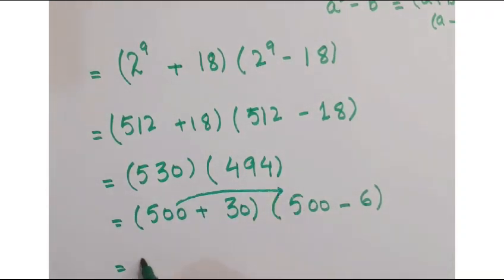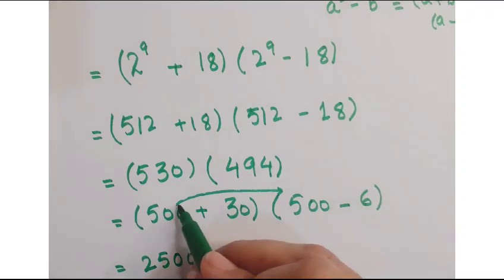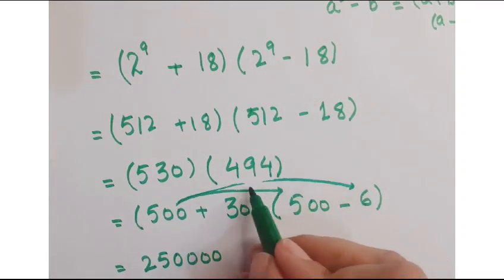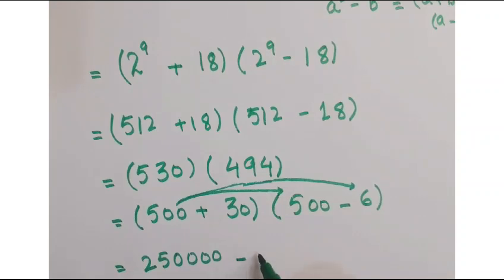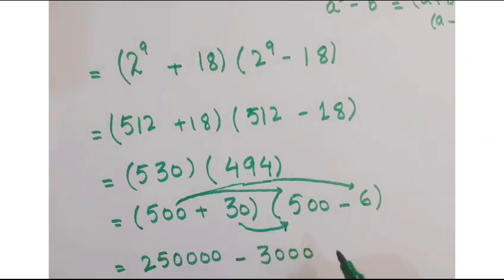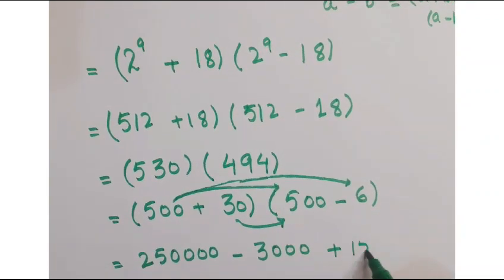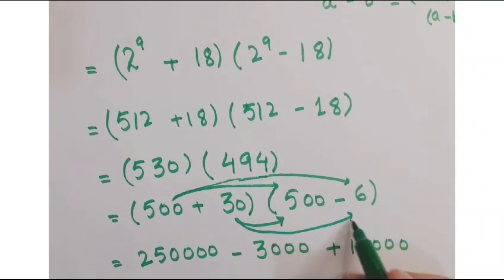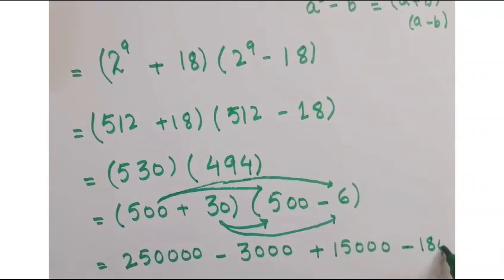Just multiply this with 500, you get 250,000 here. Then multiply 500 with 6, you get minus 3,000. Now multiply this 500, you get 15,000, and then multiply this, you get minus 180.